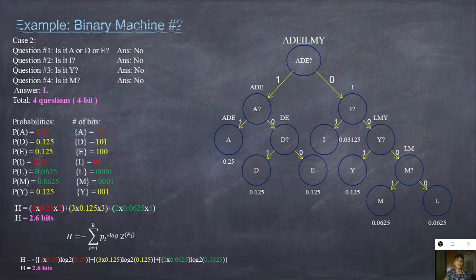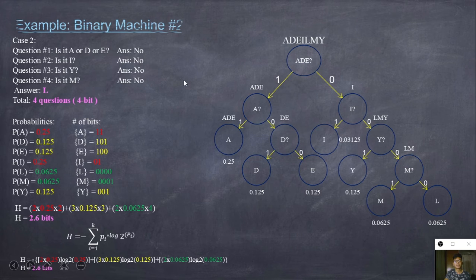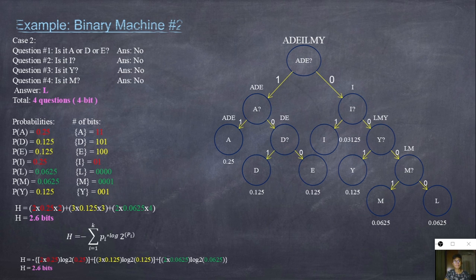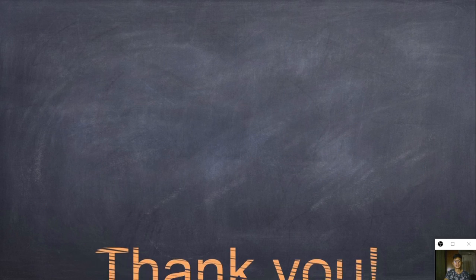Comparing the two methods in finding entropy and probability, the more convenient method is binary machine number 2, because it uses fewer and simpler representations, fewer questions, and fewer total equations needed to find the entropy using both the probability method and the Hartley equation. That concludes my presentation.